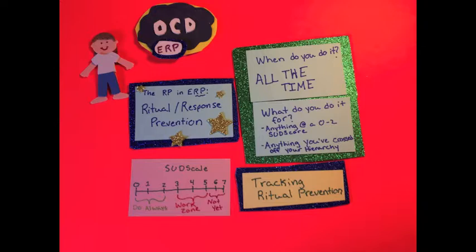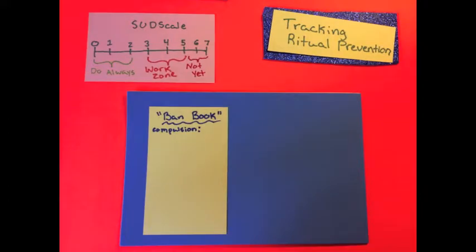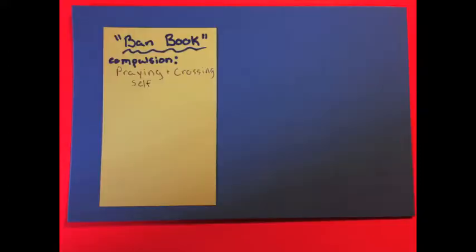And here are two of my favorite ways. The first way is what we call a ban book, and it's you try to get a little index card size notebook to carry with you and to track your rituals. Start out by picking a compulsion that you're going to track. For this example, I'm going to be using the compulsion of praying and crossing yourself. This is a compulsion that's common for people with scrupulosity, especially religious scrupulosity.